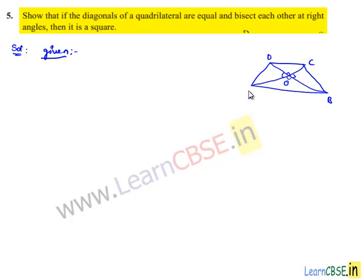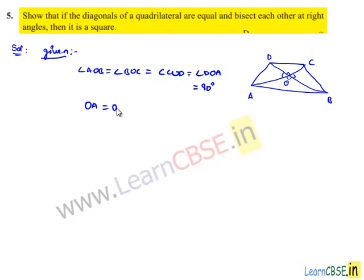The diagonals bisect each other perpendicularly, so all these angles will be 90 degrees. We can say angle AOB is equal to angle BOC is equal to angle COD is equal to angle DOA is equal to 90 degrees. As the diagonals bisect each other perpendicularly, we can say OA is equal to OC and OB is equal to OD.